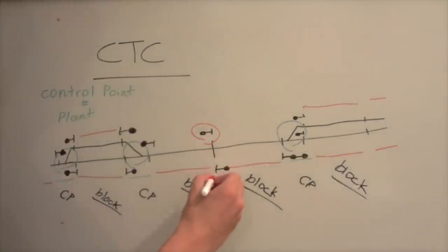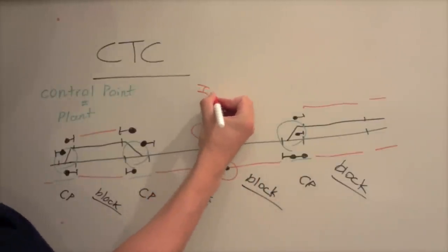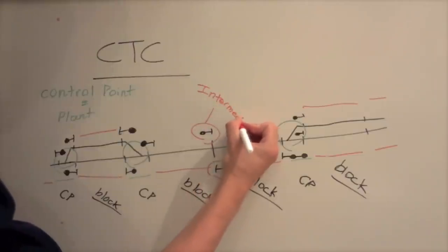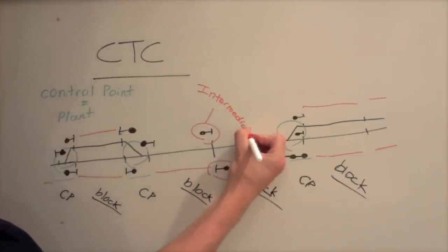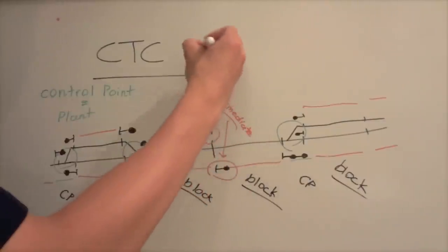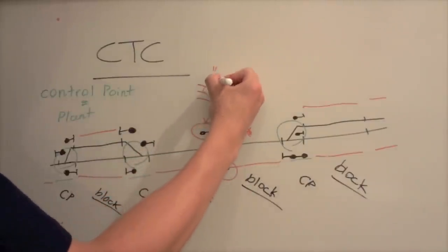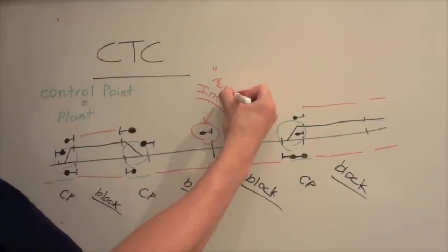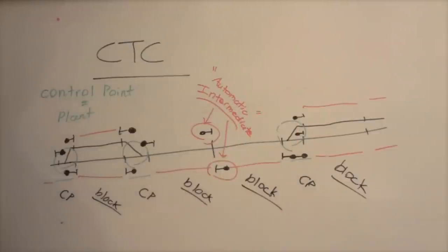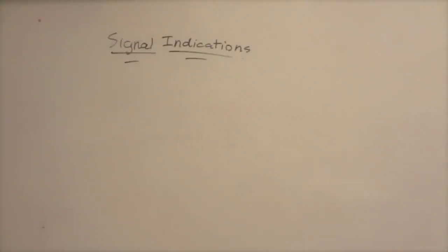All right, so the next thing I'm going to talk about here are intermediate signals. As I just mentioned, a dispatcher controls the signals and train movements through a control point, or as you can see here, labeled on the board, CP. In between control points, there are intermediate signals. And as you can see, I just labeled these here, and they are in between two control points. And what they do, they're automatic signals that are not controlled by the dispatcher. And they just relay information about the track ahead. And so usually a CTC system is a combination of both control point signals and intermediate signals.